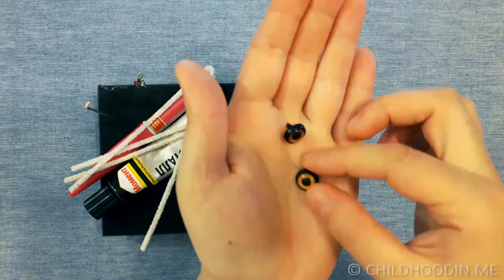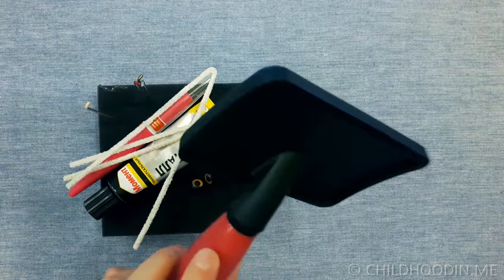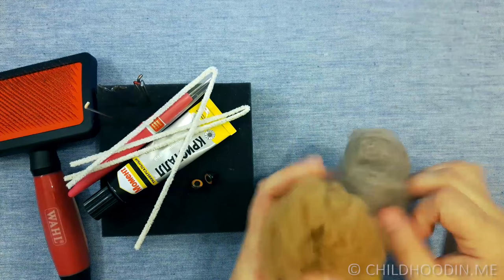A few pipe cleaners, a pair of eyes, either glass or plastic, a carder for mixing wool, and colored wool - you need some shades of brown, also yellow and white.